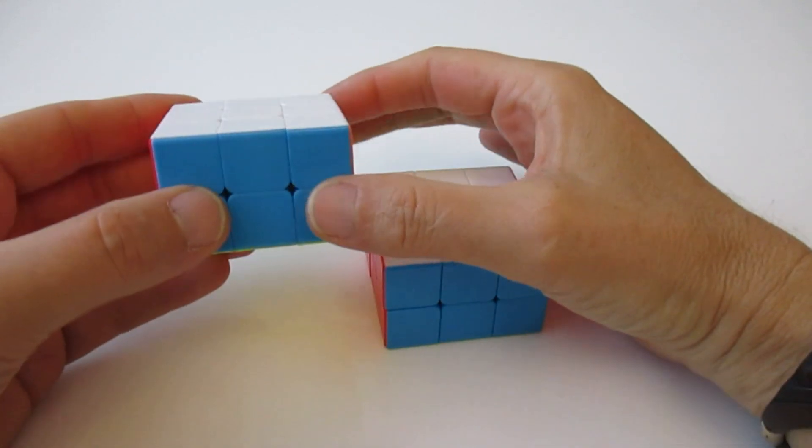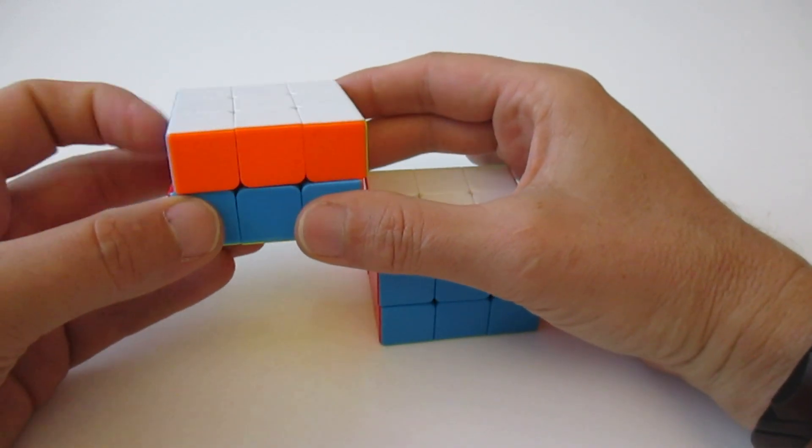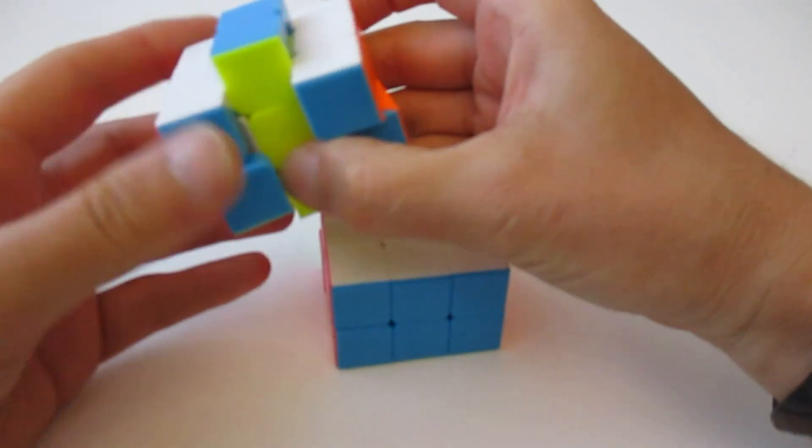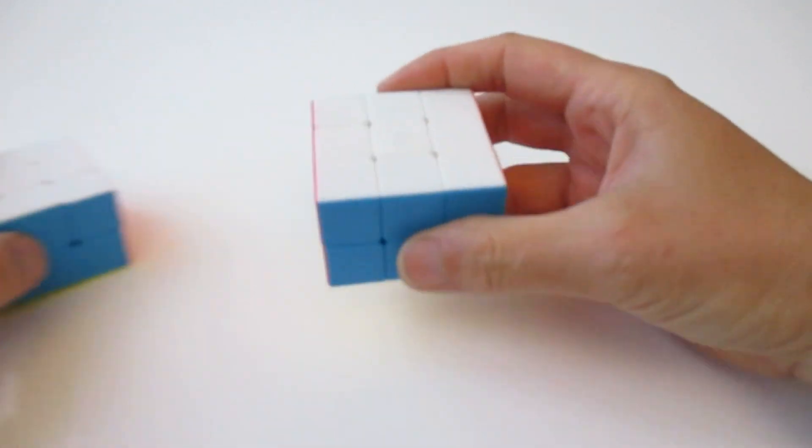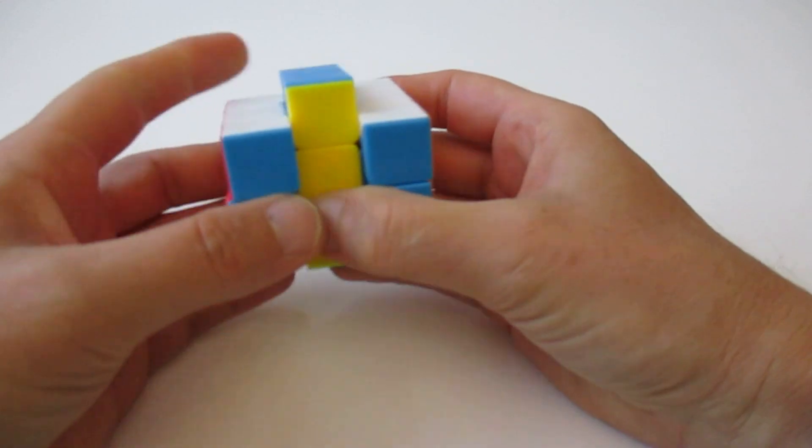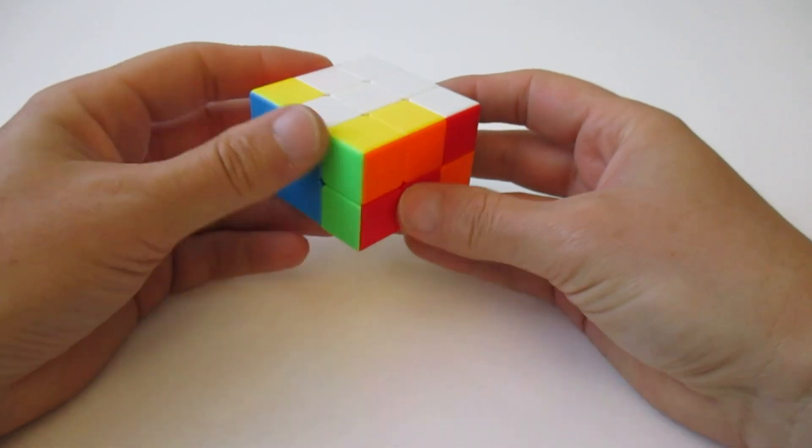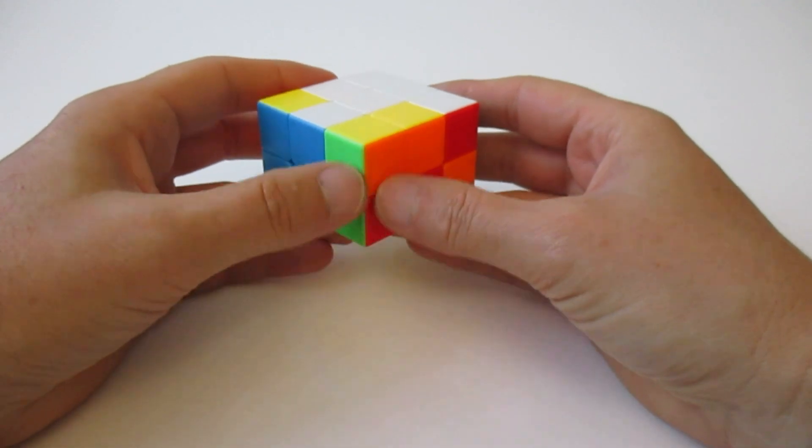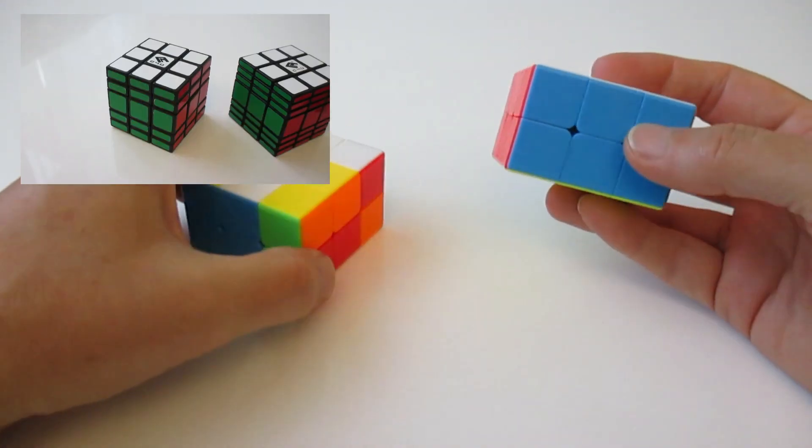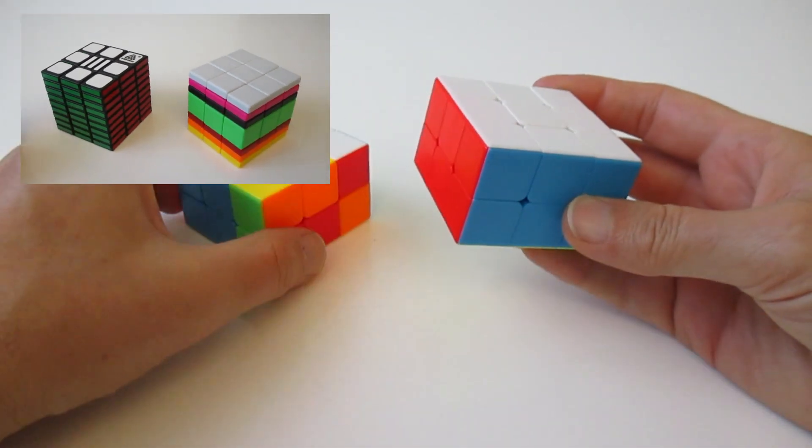When you look at the regular 3x3x2, this is possible. This is also a possible move at the regular 3x3x2 and it's also a possible move at the constraint one. Here is an easy way to solve this constraint cuboid. You don't need to know how to solve any 3x3xn cubes or cuboids.